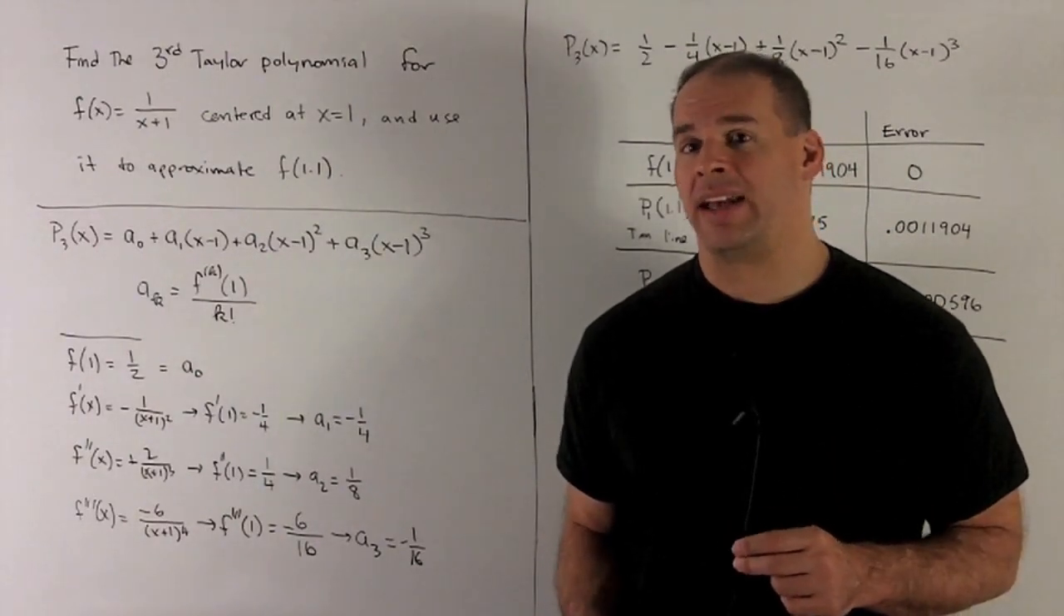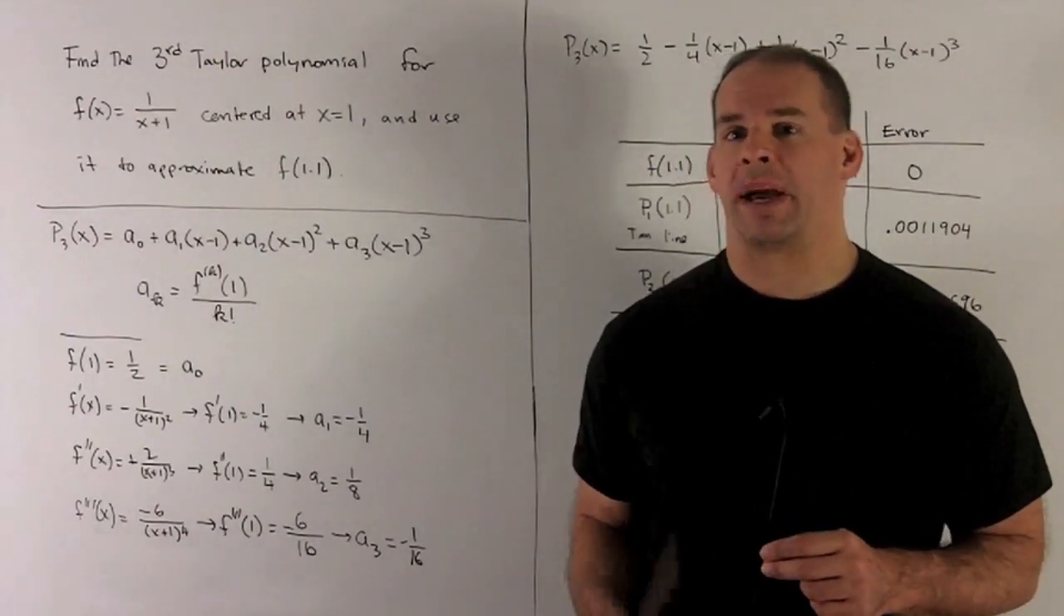For a three, I need the third derivative evaluated at one, and then I'm going to divide by three factorial, which is six. We're going to take the derivative of two x plus one to the minus three. Minus three comes down to give me a minus six, the minus three becomes a minus four, derivative of the inside is one, so I get minus six over x plus one to the fourth. Put a one in there, that gives me minus six over sixteen. And then to get our a three, we divide by six, so I'm just going to have minus one sixteenth.